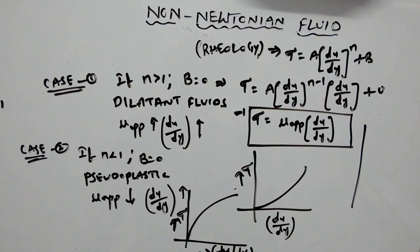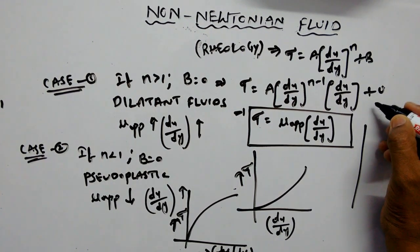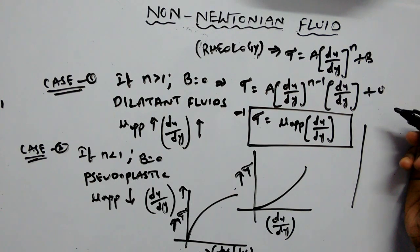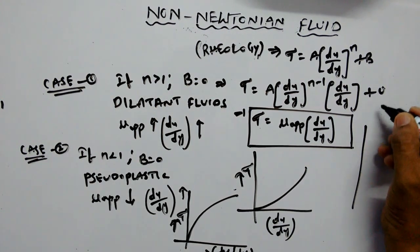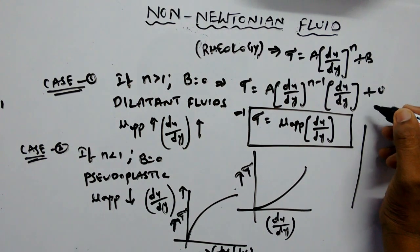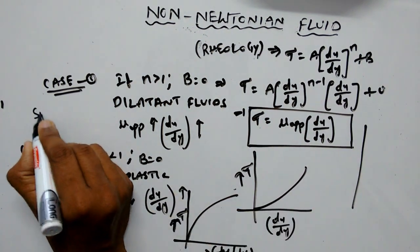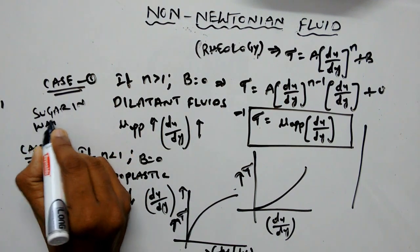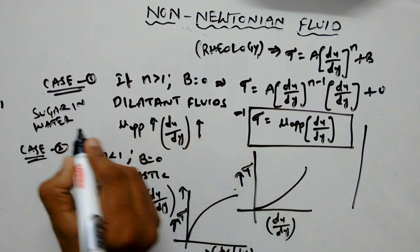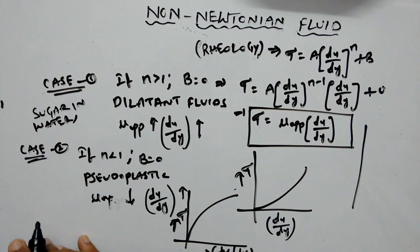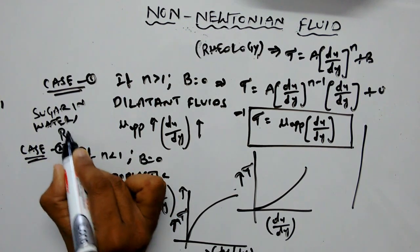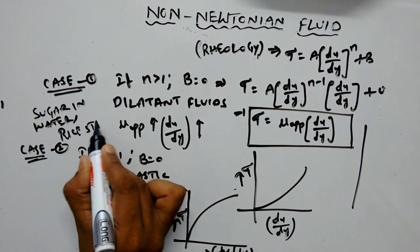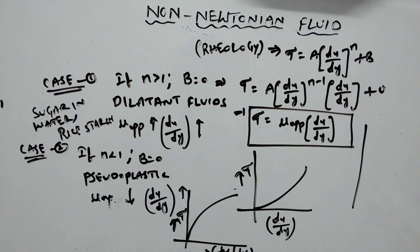The examples of dilatant fluids are sugar in water and rice starch.